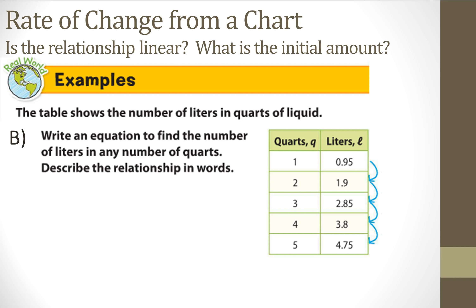So we want to know if this relationship is linear. And we want to know the initial amount. So to find if it's linear, I need to see if it has a constant rate of change. And here I see that on the right hand side, the liters is increasing by 0.95. And on the left hand side, it's always increasing by one.